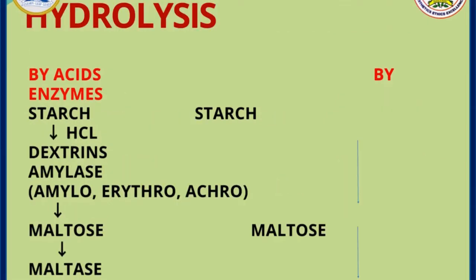Starch can be hydrolyzed by acids and by enzymes. In our body, starch is hydrolyzed by the enzyme amylase to form maltose, and maltose is then converted to glucose by the intestinal enzyme maltase. In the lab, starch can be hydrolyzed using concentrated hydrochloric acid, forming glucose step-by-step through the formation of dextrins — amylodextrin, erythrodextrin, and acrodextrin — which give various colors with iodine.